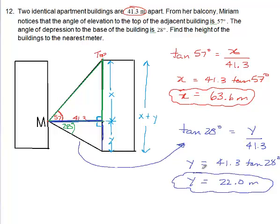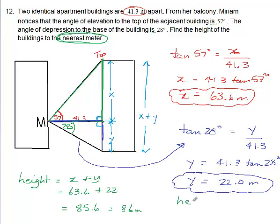Now, we're still not finished because the height of the whole building is x and y together. So the height of the building, the height is x plus y, isn't it? So it's 63.6 plus 22, so that's 85.6. Now, let me check instructions to see what it said about decimal places. Find the height of the buildings to the nearest meter. So that means no decimal place. So the answer is 86 meters. So the height of the buildings, because they're identical buildings, right? B-U-I-L-D-I-N-G-S is 86 meters.